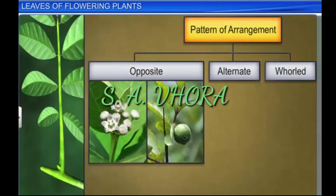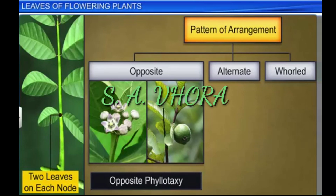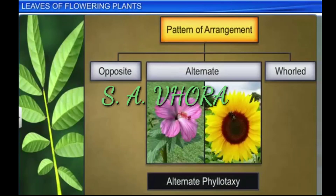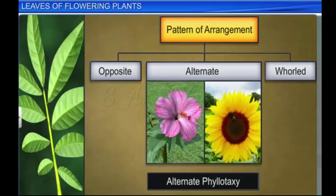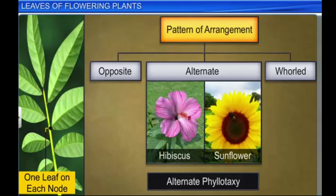In opposite phyllotaxy, two leaves arise from the node in opposite directions. It is found in guava and Calotropis. In alternate phyllotaxy, a single leaf arises from the node of a branch, with only one leaf on each node, and the leaf at the next node is in the opposite direction. Alternate phyllotaxy is seen in the plants hibiscus and sunflower.